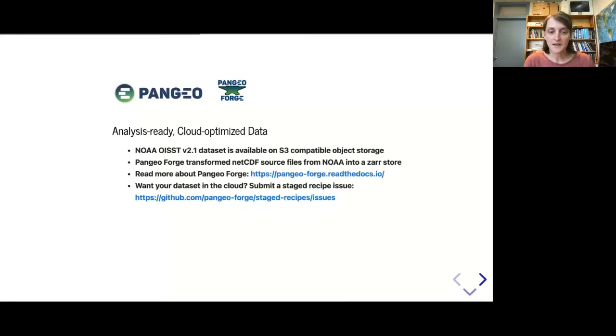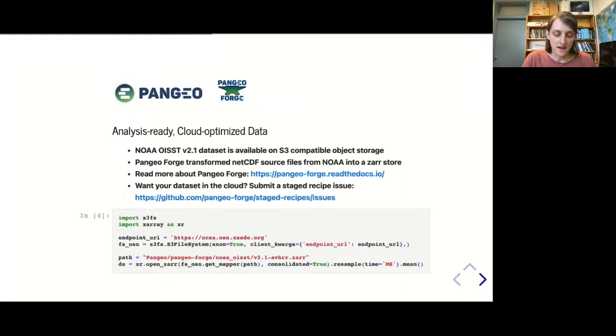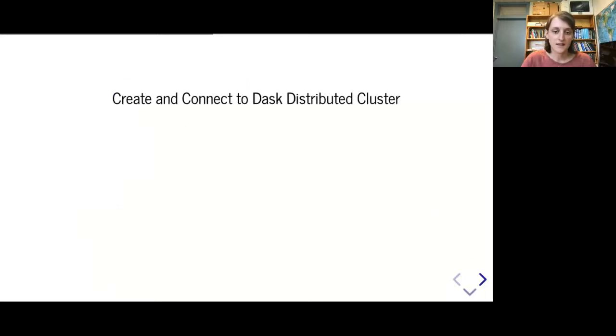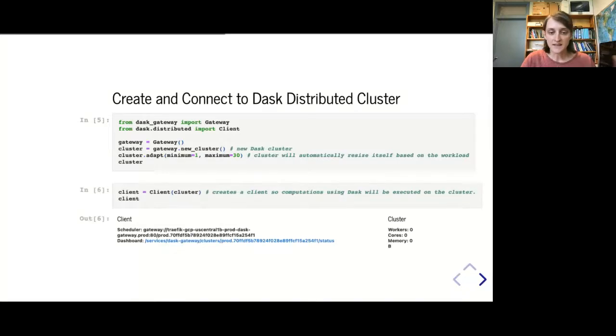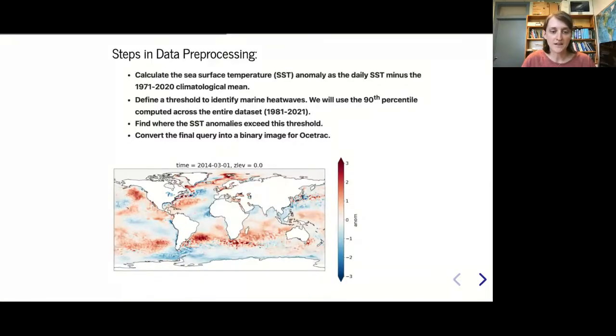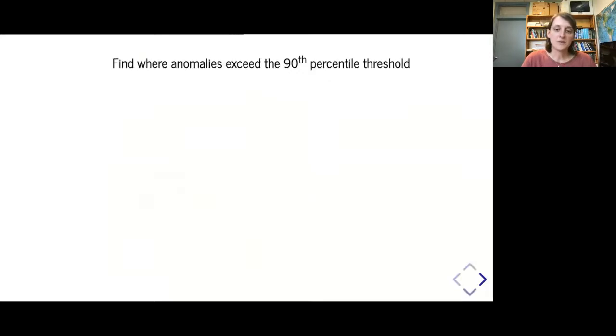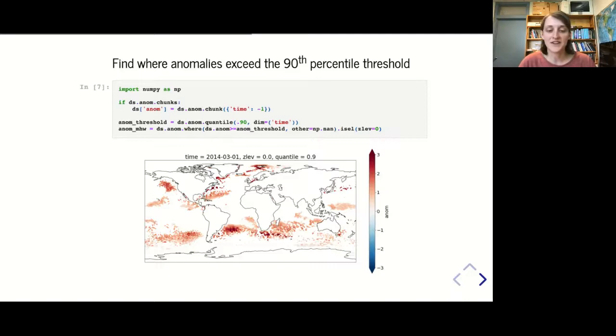From this dataset we compute sea surface temperature anomalies relative to some reference period, shown on the bottom map. From those anomalies we compute a threshold and only take those that exceed it, shown on the top map. These are the extreme marine heat wave anomalies. We're using a 90th percentile threshold. Here I'm opening the OIST dataset - there's a binder link at the end of the talk where you can run these cells.